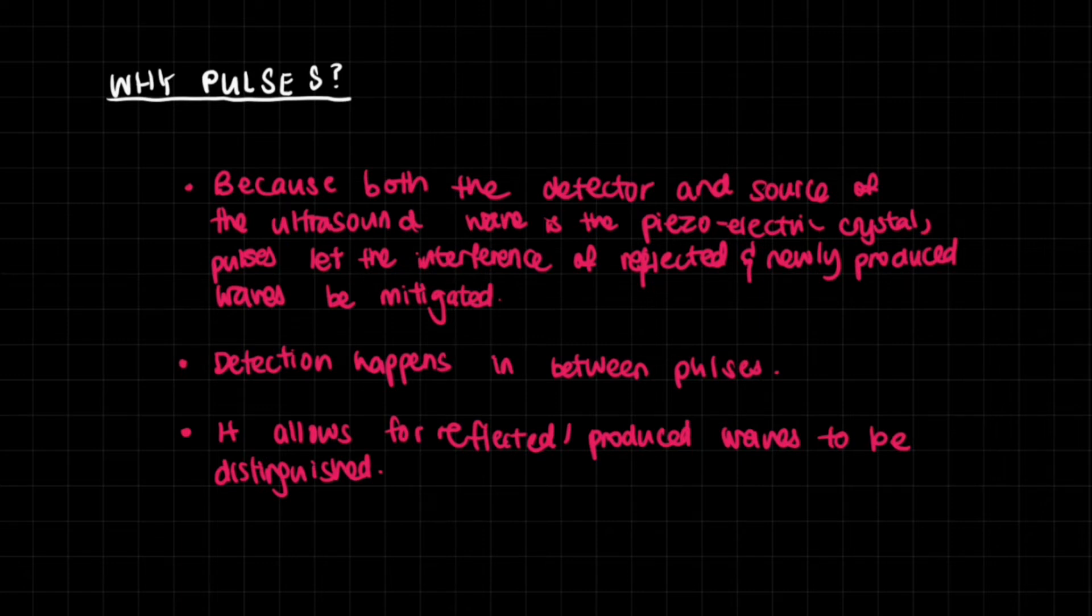You have to give one pulse, stop for a while, then give another pulse. This mitigates the interference of the reflected and newly produced waves. You don't want the reflected waves coming back and the newly produced waves going out to hit each other and affect each other, ruining the information in some way. You want them to be completely separate from each other's paths.